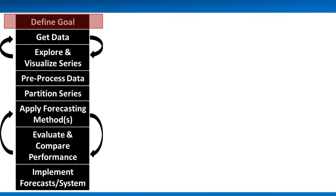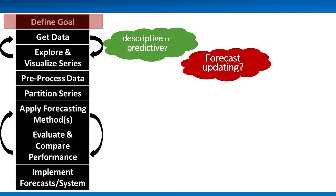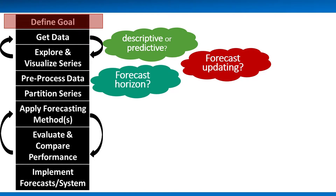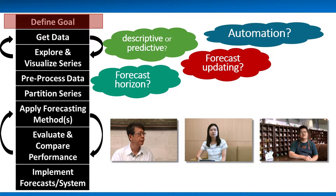In the first week, we focused on different types of goals that call for forecasting. We discussed the importance of properly identifying what the forecast will be used for, and then used this information for determining whether the goal is predictive or descriptive, what is the required forecast horizon, how the forecast will be delivered, and more. We also saw several interviews with stakeholders that can benefit from forecasting.